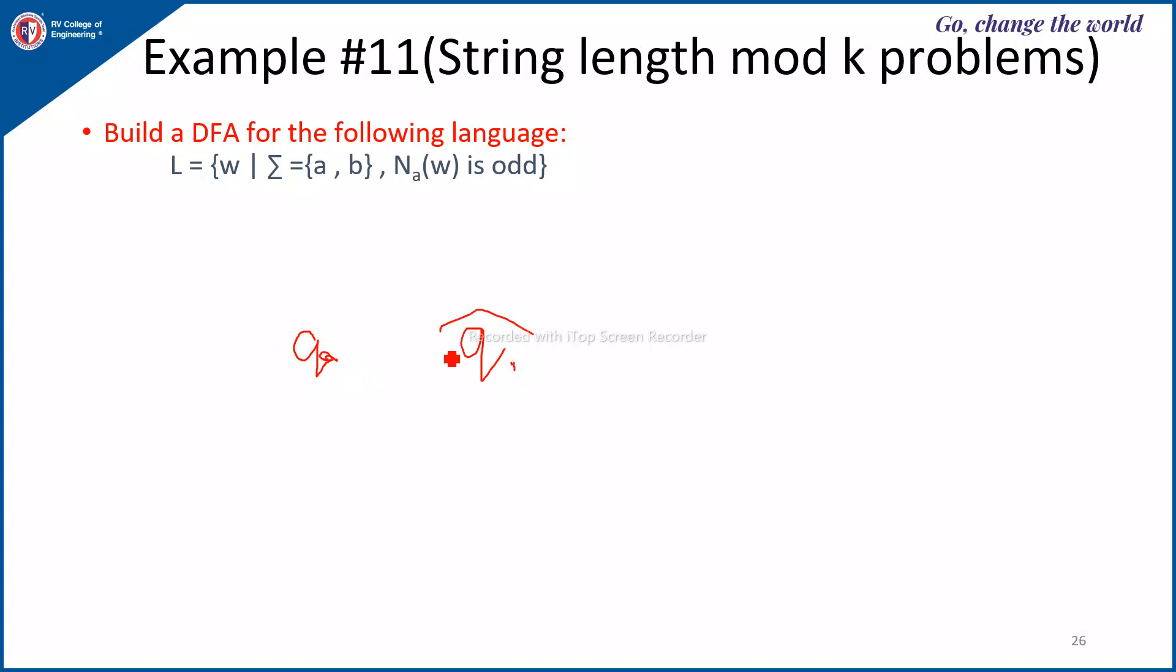And since it is odd, Q1 will become the final state. If it is even, Q0 becomes the final state. Since it is odd, Q1 becomes the final state.